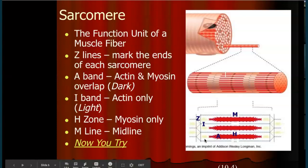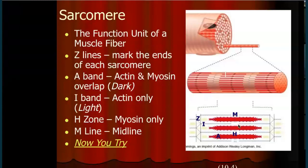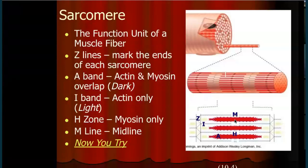The I band, where you have only thin filaments with no overlap, is the light band. The H zone is where you have no overlap and only myosin, the thick filament. The M line is the midline — right down the middle. The M line won't change; it marks the middle. The Z lines are going to come closer together during contraction, pushing the actin fibers inward.